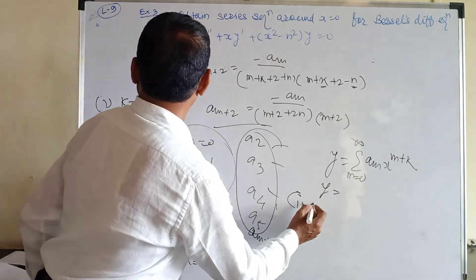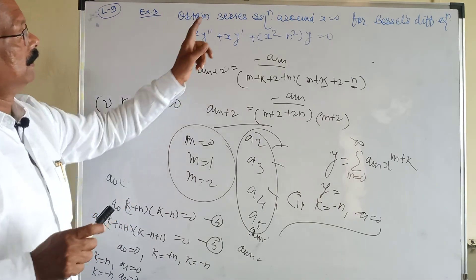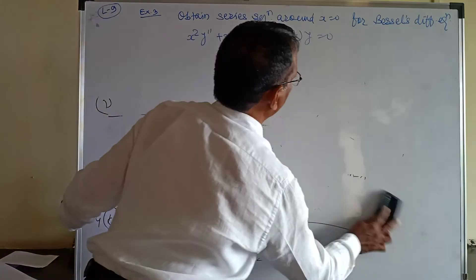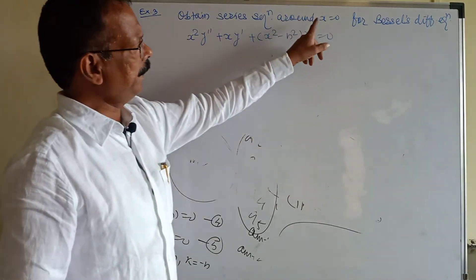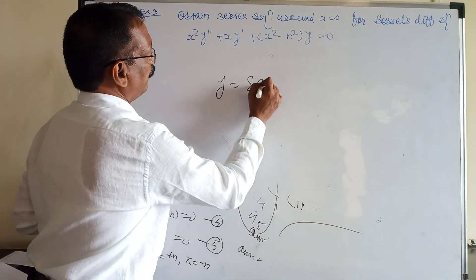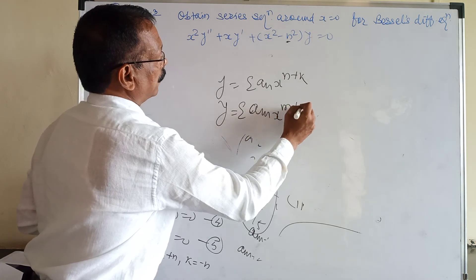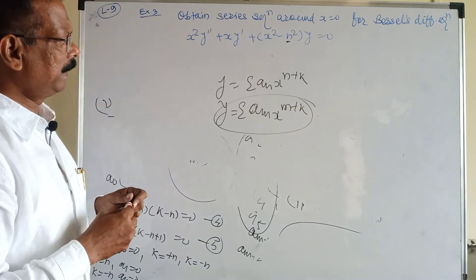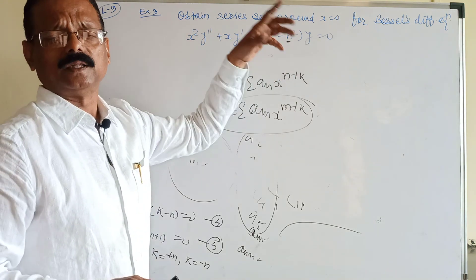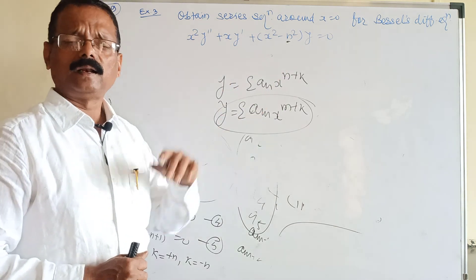For the second condition, k = −n with a₁ = 0, solve this equation similarly. Substituting m values into y = Σ aₘ x^(m+k) gives the series solution. The method is: first verify x = 0 is a regular singular point, then assume y = Σ aₘ x^(m+k), compute y' and y'', substitute into the equation, use the indicial equation to find k, and use the recurrence relation to find the series coefficients.